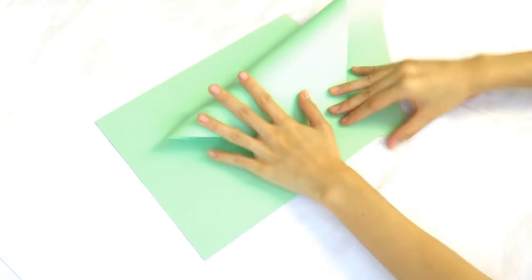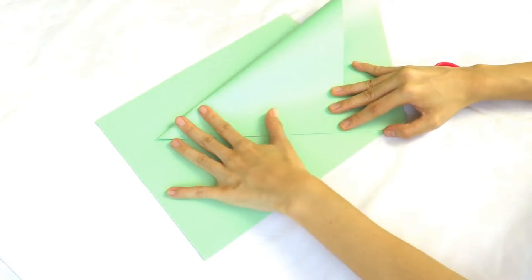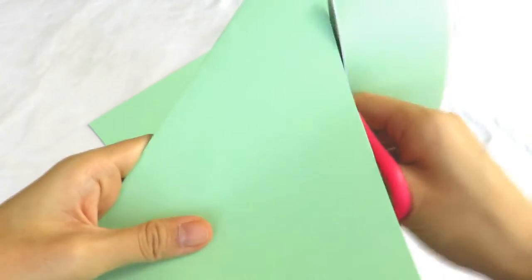First you want to fold the paper into a triangle and cut the excess in order to get a perfect square. And then do this to the other paper as well.